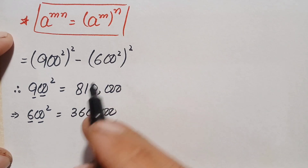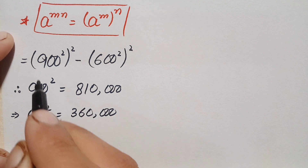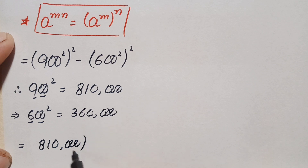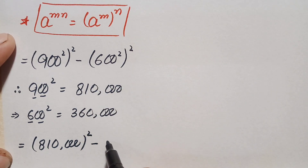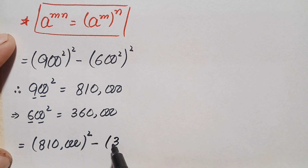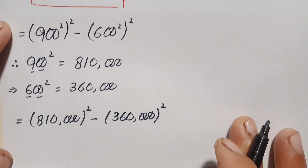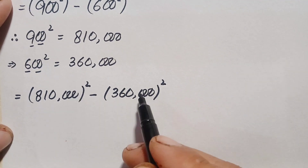We substitute these two values into the expression. So the equation becomes 810,000 whole squared minus 360,000 whole squared.